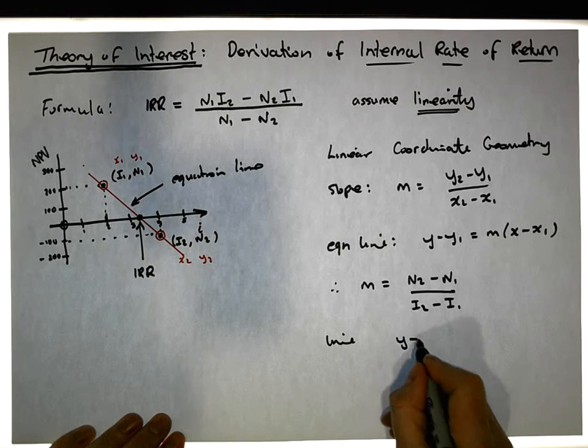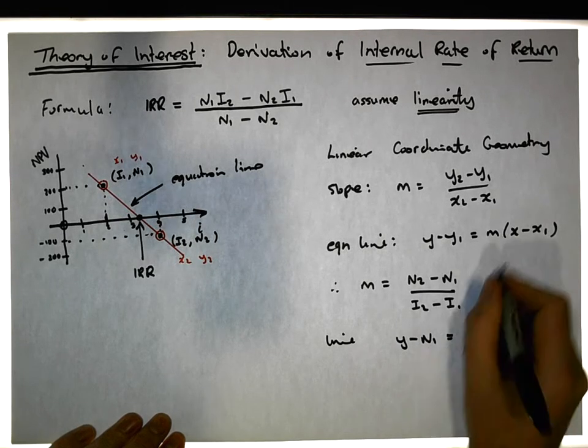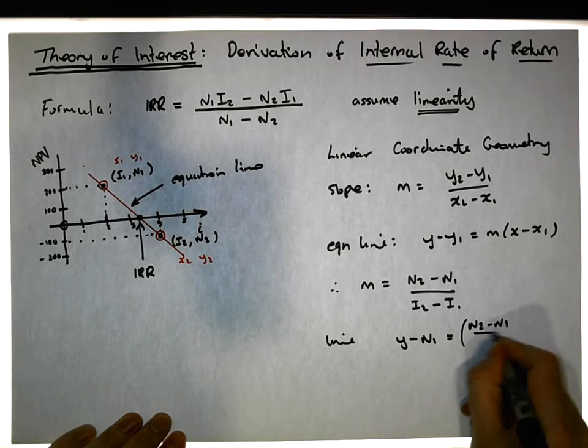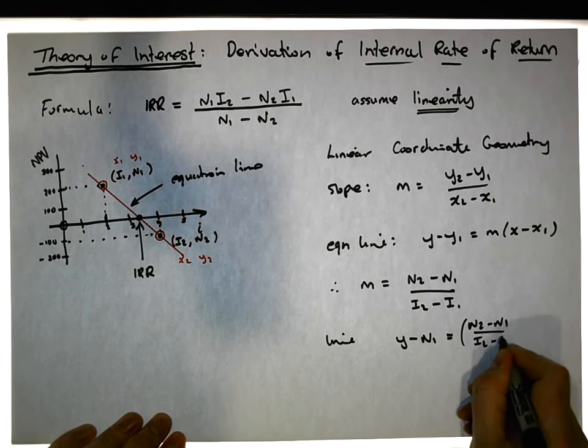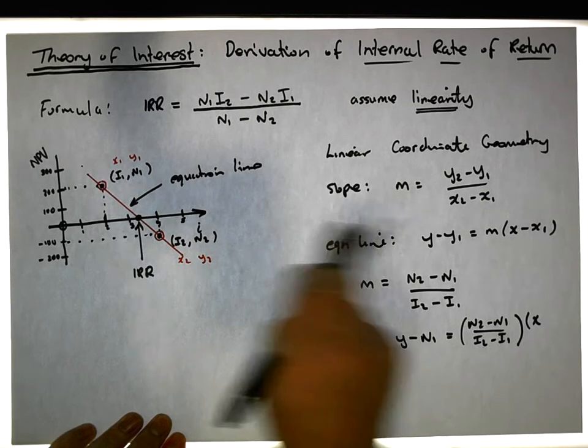And there's the equation of the line. So the line is now y minus y1, well y1 is n1, must be equal to m, which is the slope we just calculated, n2 minus n1 all over i2 minus i1, times x minus x1, and x1 is i1 in this case, so it's minus i1.